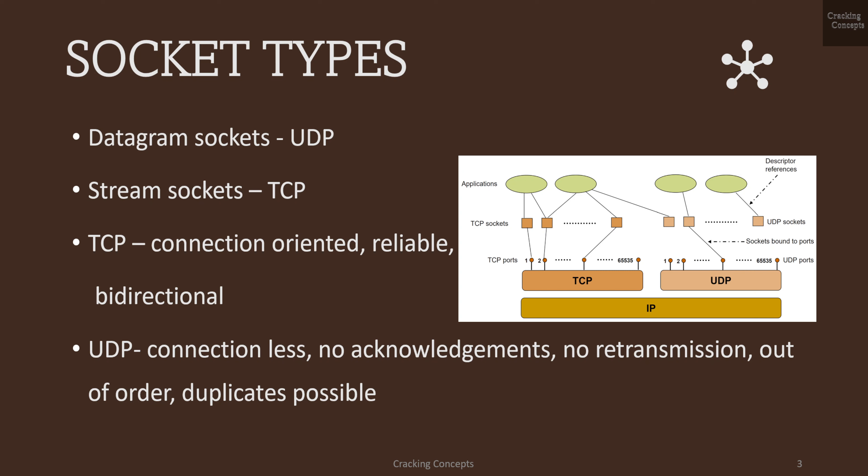TCP is a connection-oriented protocol which is reliable and bi-directional, whereas UDP is a connectionless protocol which has no acknowledgements, no retransmission, where packets might arrive out of order and duplicates are possible.